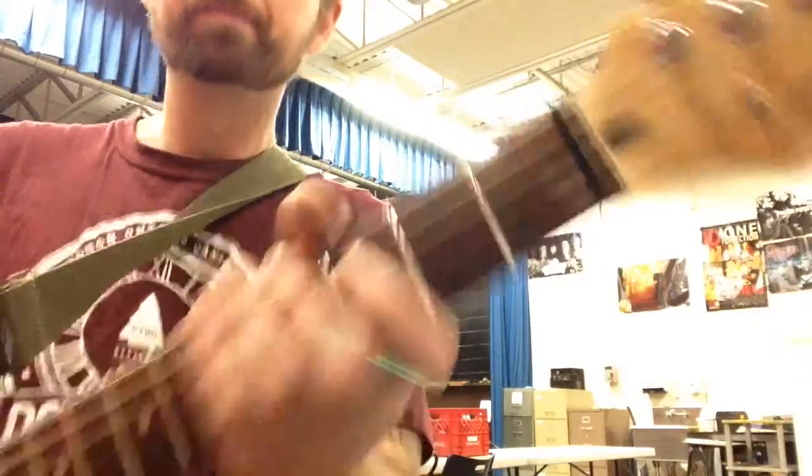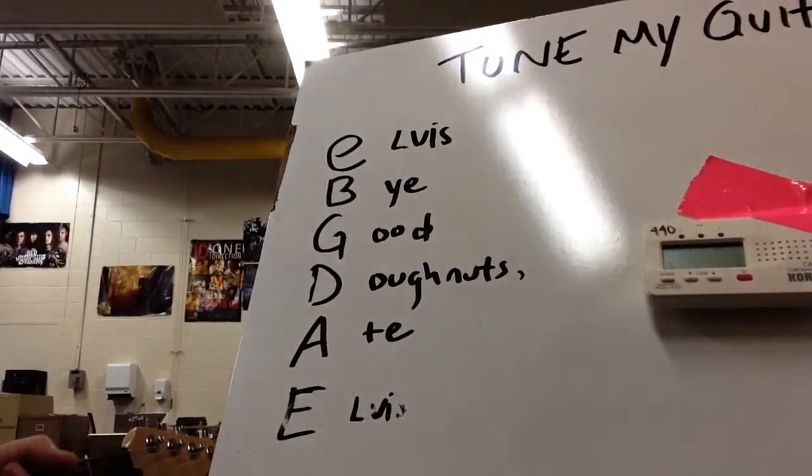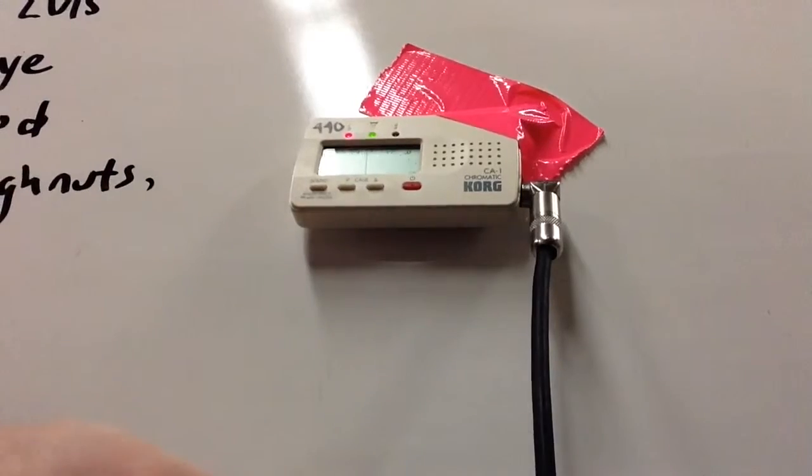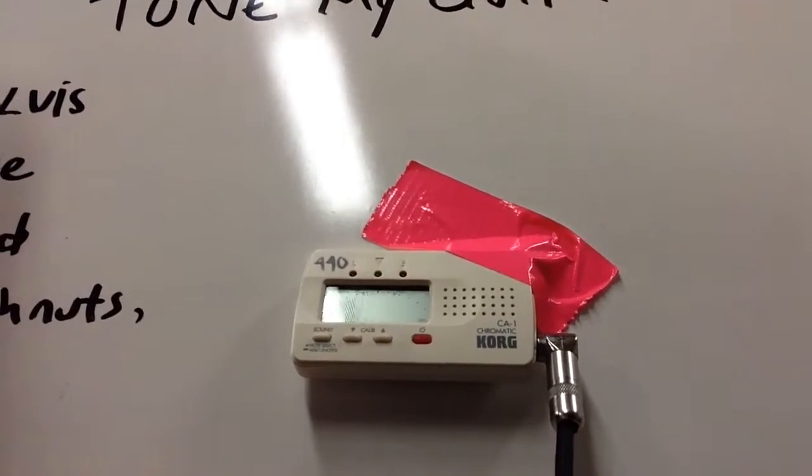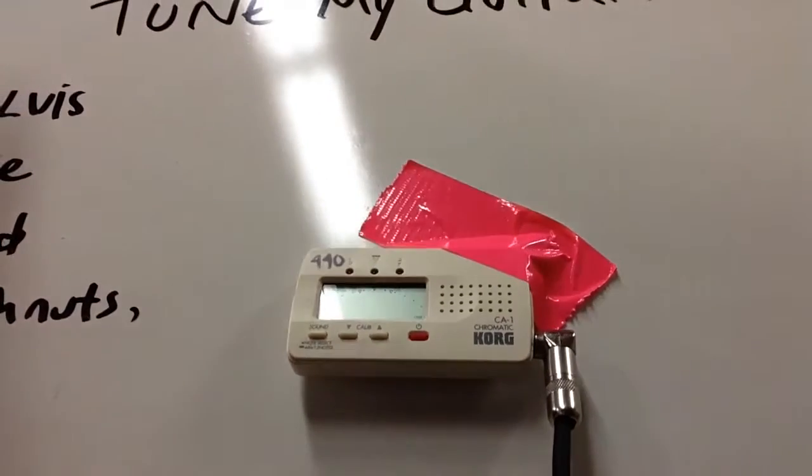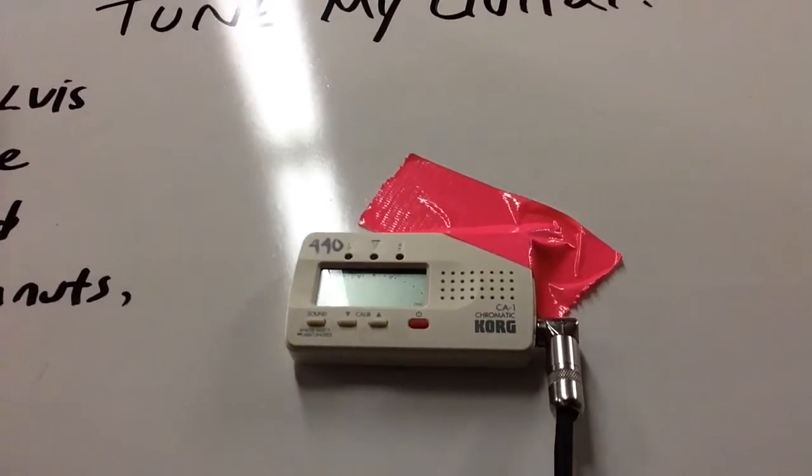Okay, so let's get down to it. We know the notes that our strings are supposed to be tuned to. Elvis ate donuts, goodbye Elvis. But what if they're out of tune? Okay, let me bring this tuner in so we can see what's going on here. Can you see that a little bit? There is a bit of a shadow on it. That's weird.